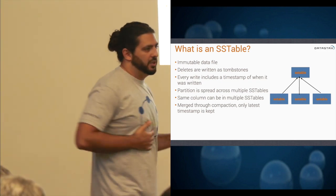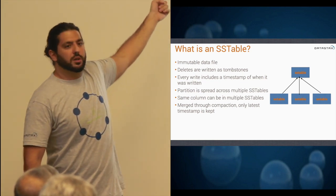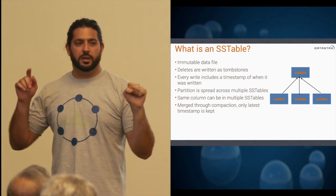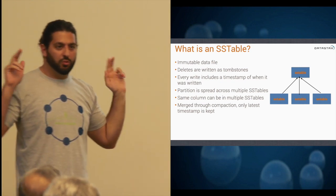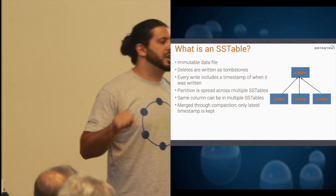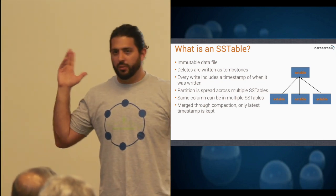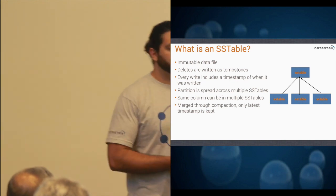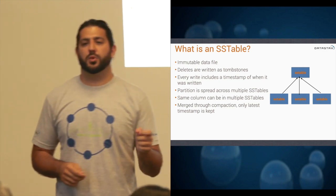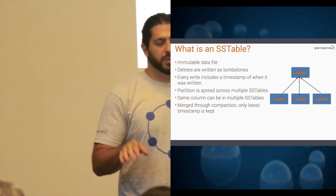Memtables are flushed to disk as SS tables — which are immutable data files. Deletes are written as tombstones. Because this is a distributed system, a node may not see a delete at a point in time if it was down. The tombstone just marks that the data was deleted. Everything that gets written has a timestamp — if Cassandra gets back two different answers from two different servers, it takes the one with the most recent timestamp. This is the last-write-wins approach instead of something like vector clocks. A partition can be spread across multiple SS tables, and that's where compaction comes in — it merges everything together and makes reads nice and fast.